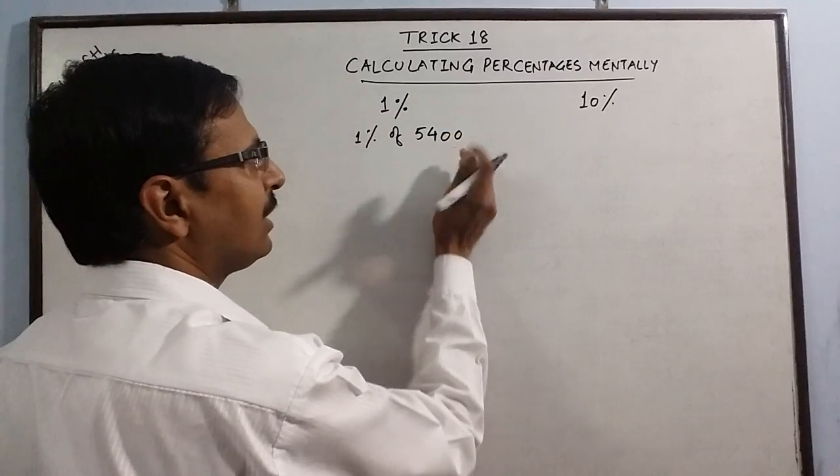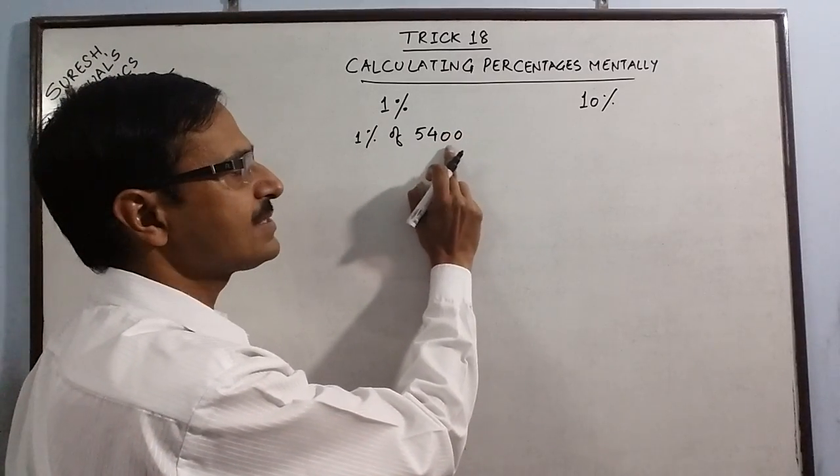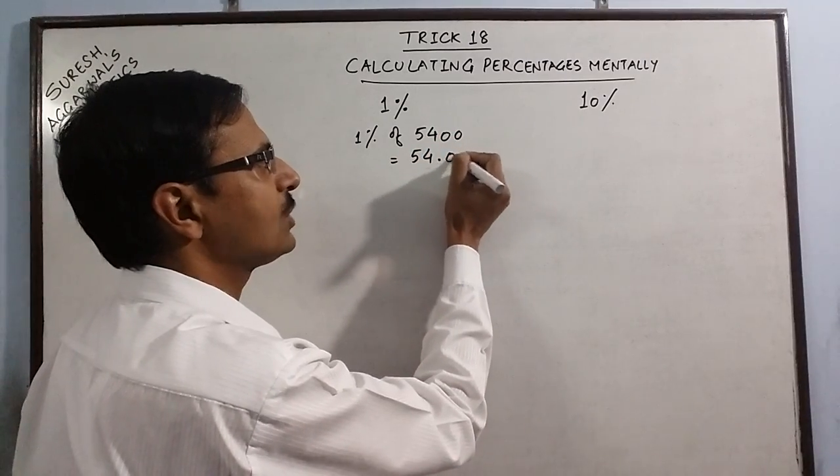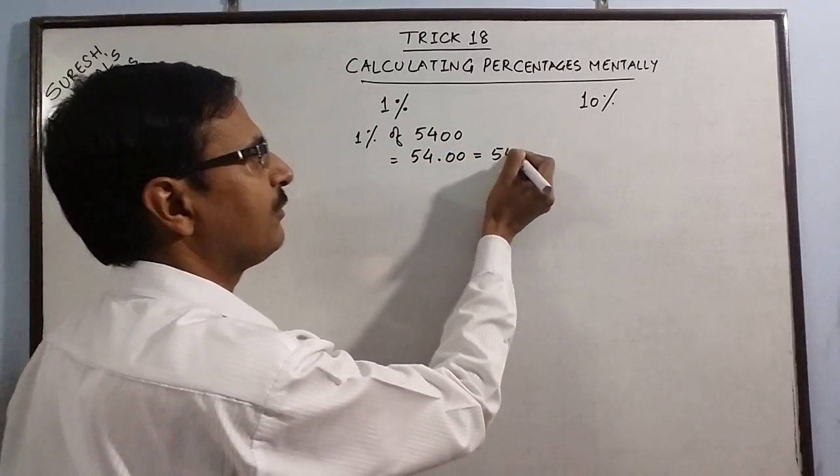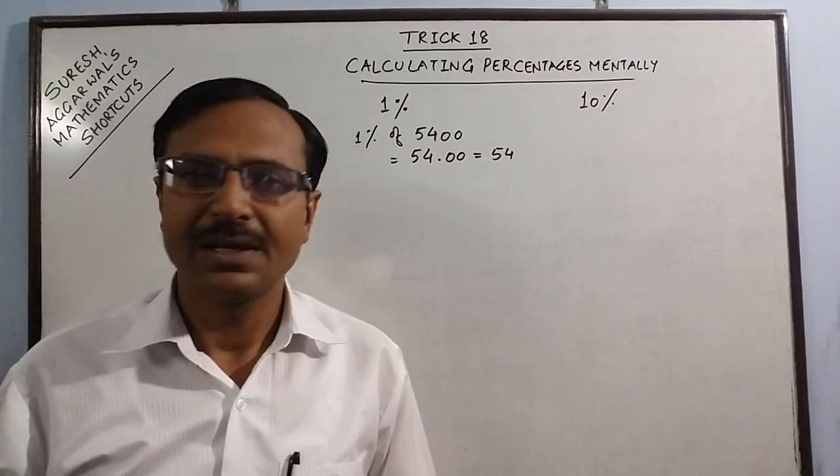putting a decimal from the right. You select two places 00 and put a decimal. So 54.00, it is 54. So 1% of 5400 is 54.